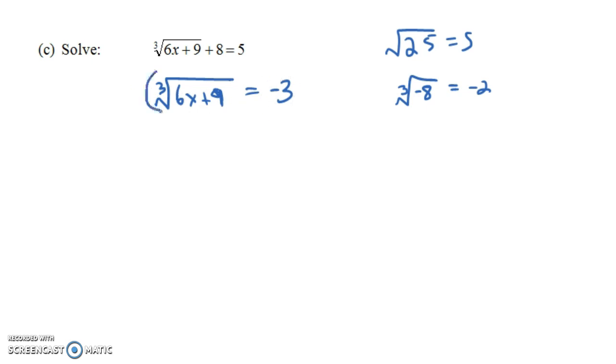So what do we do in this case? Well, instead of squaring both sides, we're going to raise both sides to the third power, since we have a cube root. Then the left-hand side will just be 6x plus 9. The right-hand side is negative 27. If you subtract 9 from both sides, you get 6x equals negative 36, and so x equals negative 6.